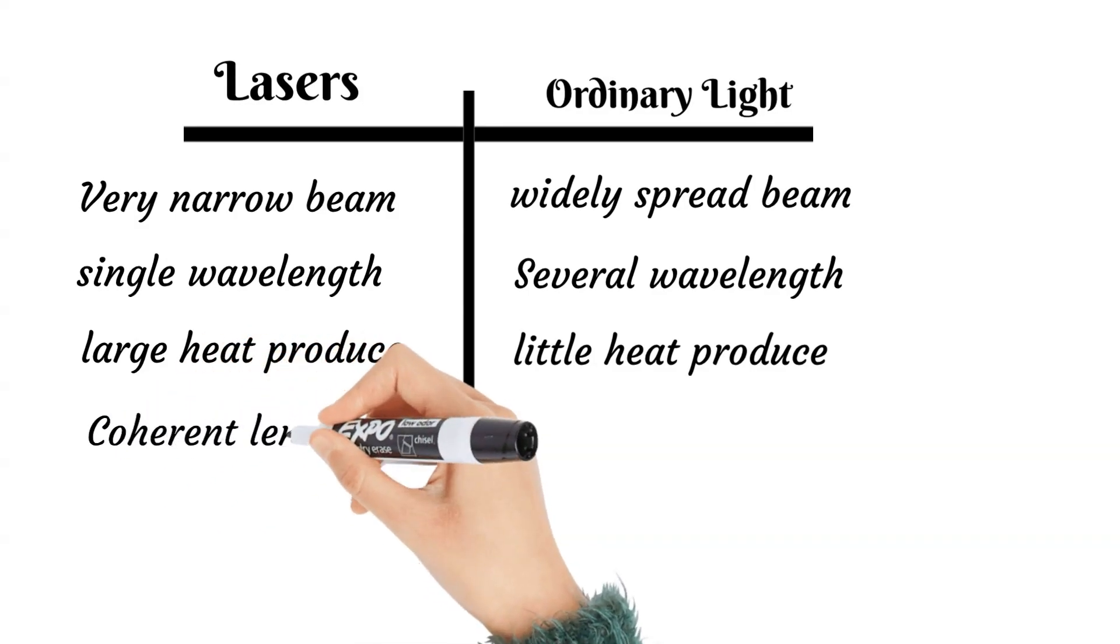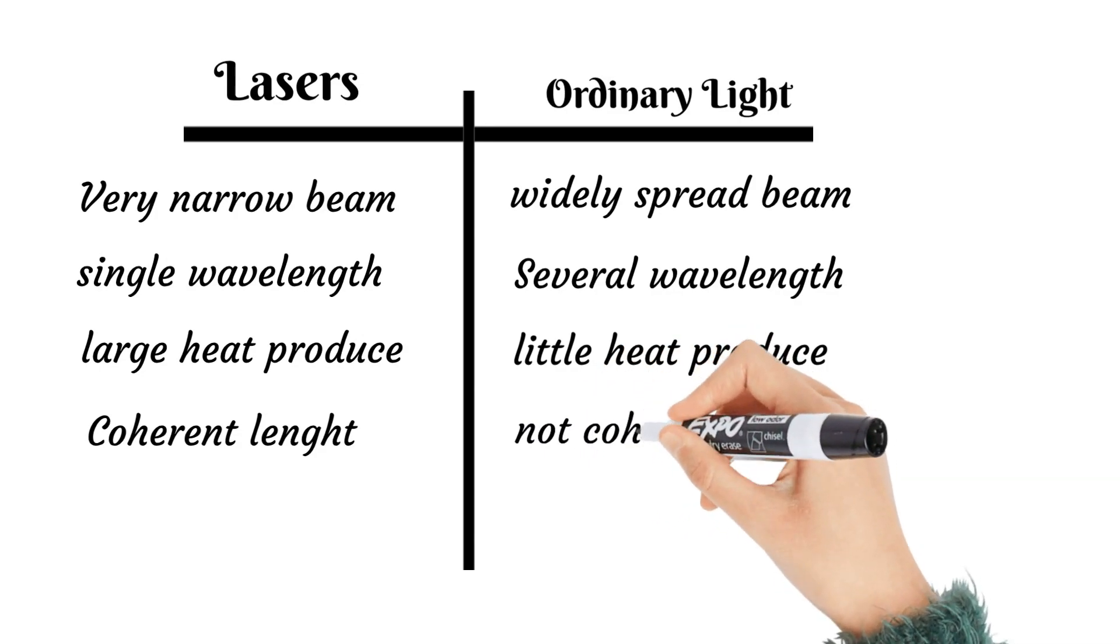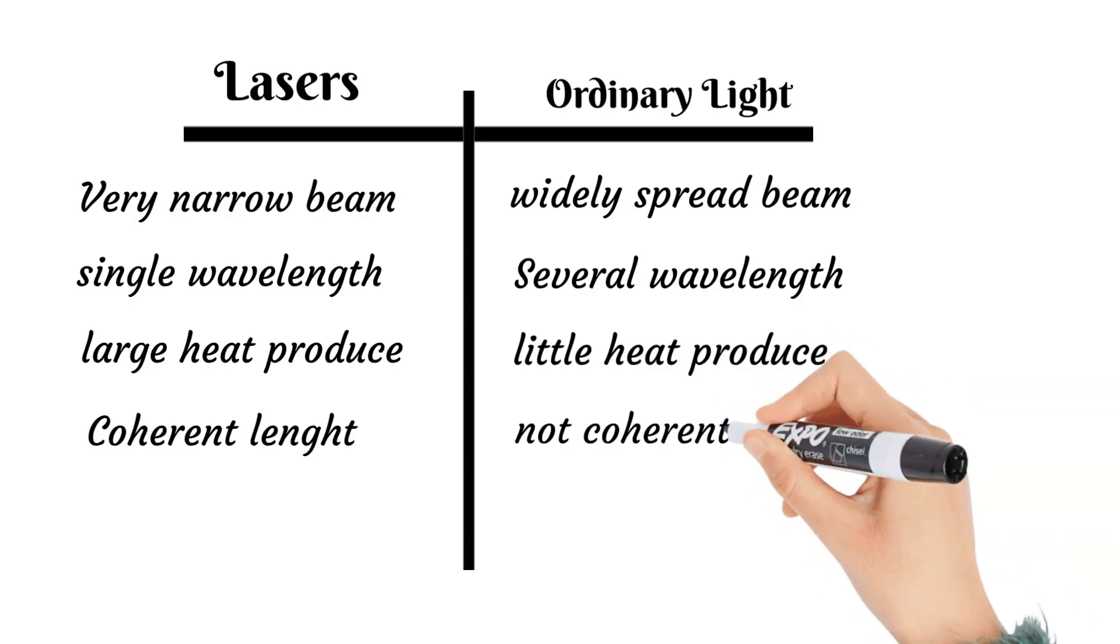Laser lights are coherent - uniform - they are uniform, they travel far and are monochromatic, while ordinary lights are not coherent.